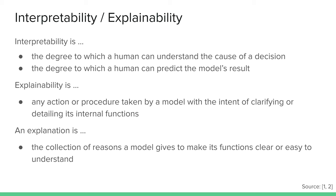Before we dive into the technical details, let's clarify some terminology so we speak of the same things when we talk about explainable artificial intelligence. First, interpretability is the degree to which a human can understand the cause of a decision — how well we as humans, seeing the same input, can predict what the model will output. It's a passive characteristic of a model referring to the level at which the model makes sense to us as human observers.